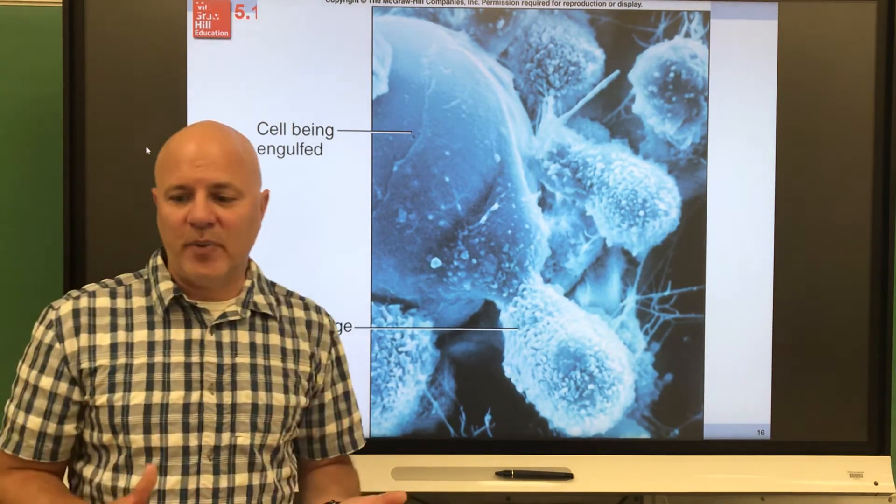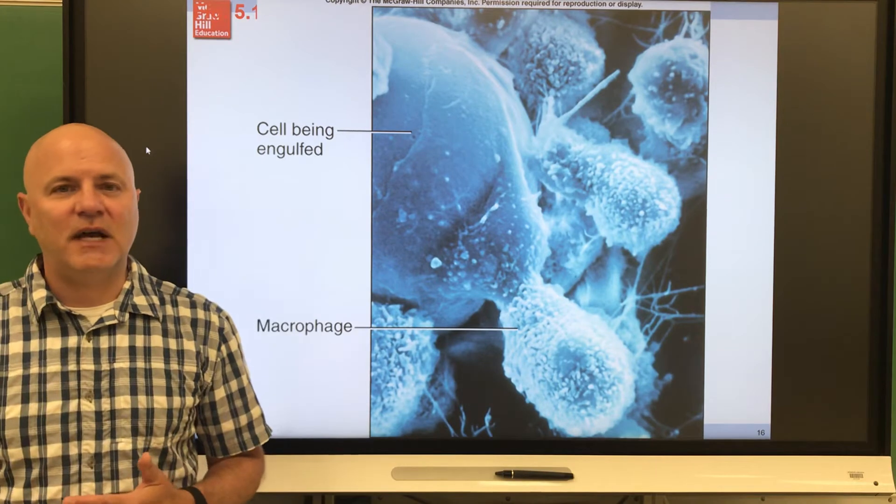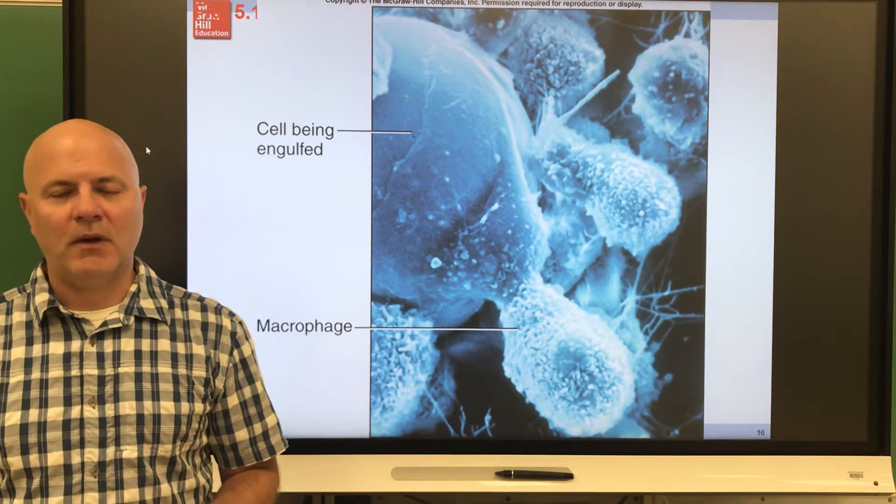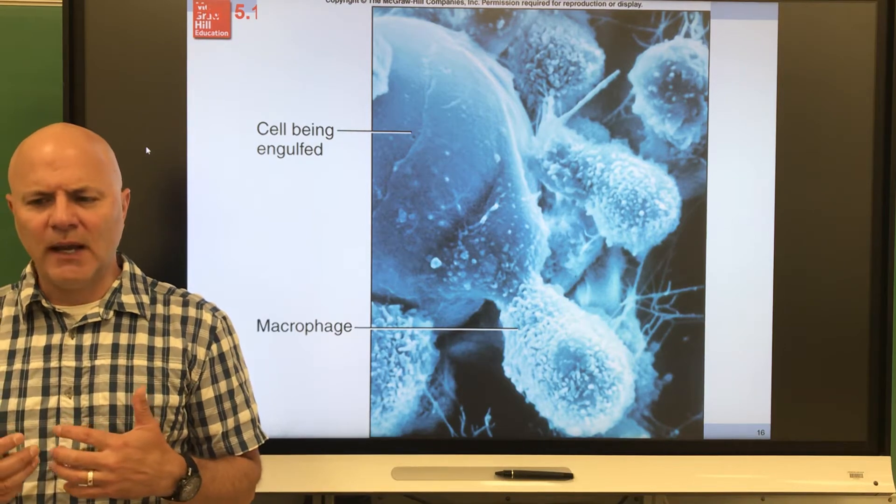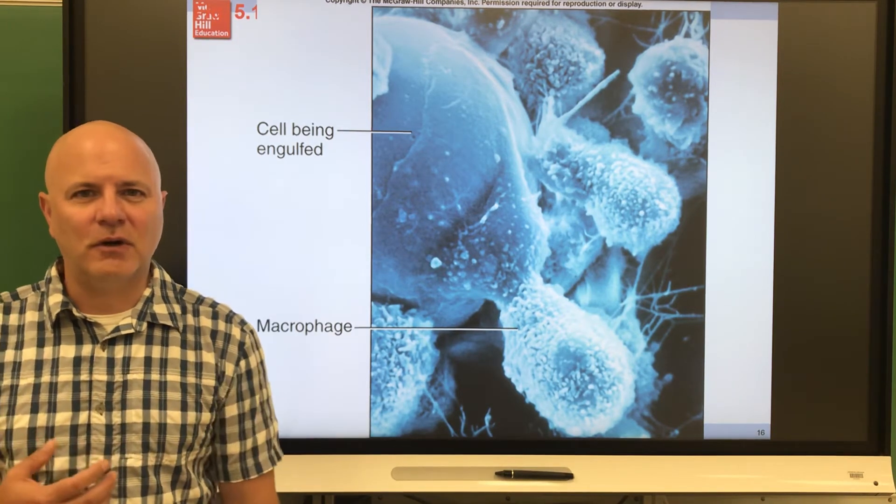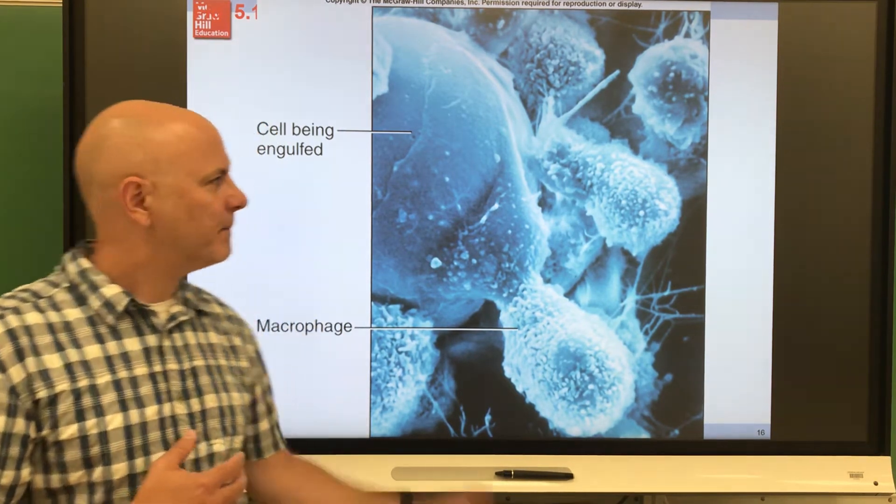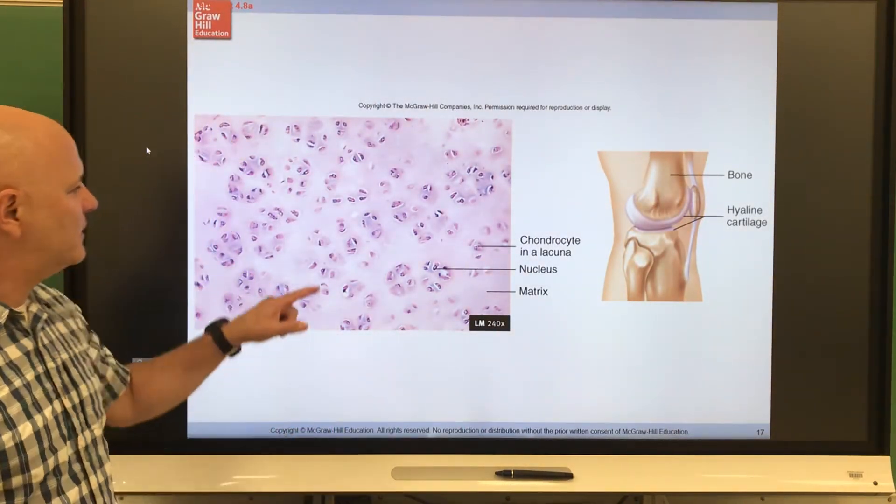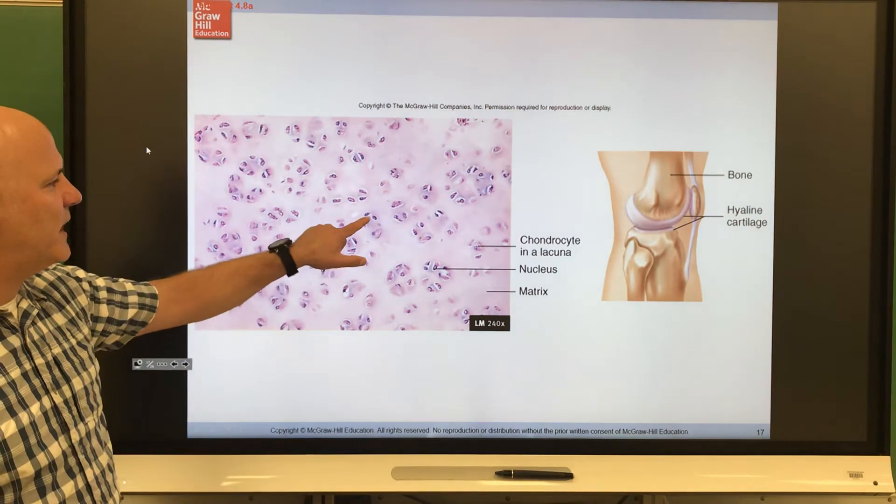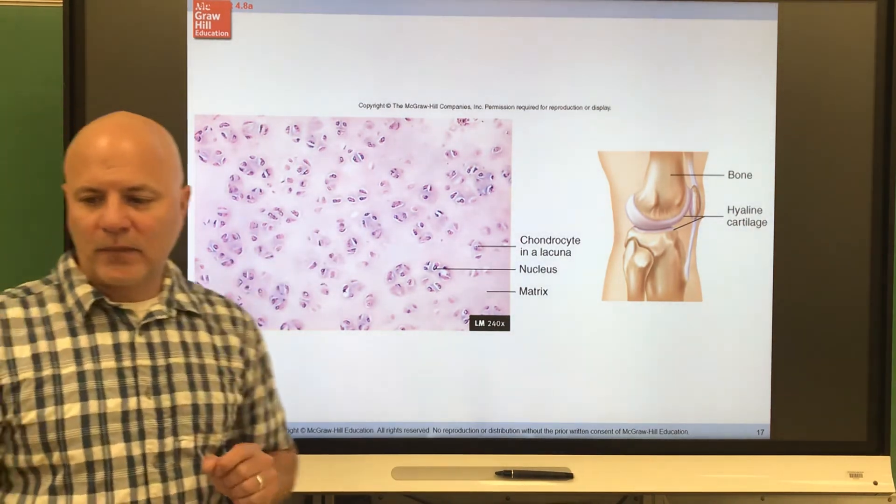Next are mast cells. I don't have a picture of a mast cell, but these are cells that cause inflammation. So they bring blood to an area. And so they can also cause allergic reactions because of that. Next are chondrocytes. Chondrocytes are cartilage cells. So they're the cells that produce cartilage.